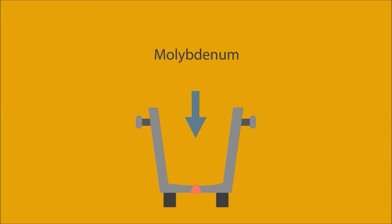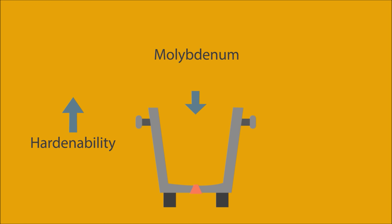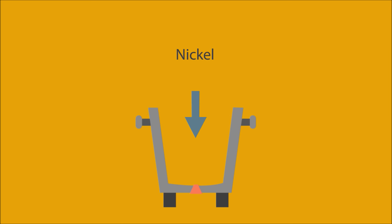Molybdenum also increases the hardenability of steels. When combined with chromium and nickel, it has a strong multiplicative effect on hardenability. It is used in both alloy and stainless steels.